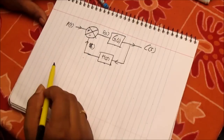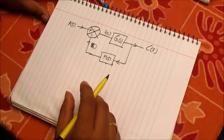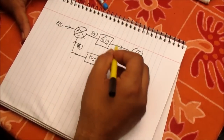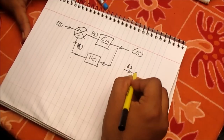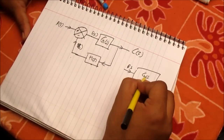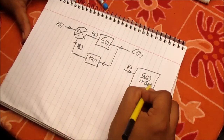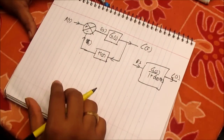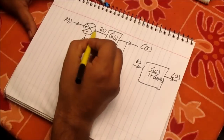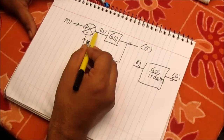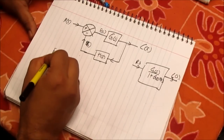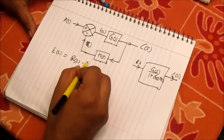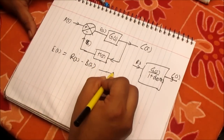As you know, the transfer function of this system is given by CS/RS = GS / (1 + GS·HS). Now we will derive this formula. Consider the summing amplifier: the output of the summing amplifier is E(S), and the input is R(S) minus B(S). This is equation 1.